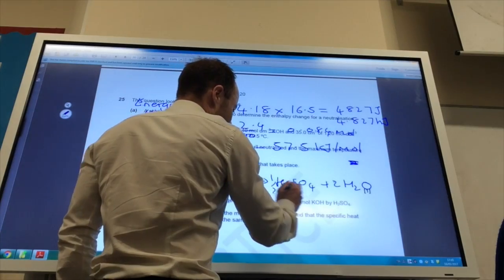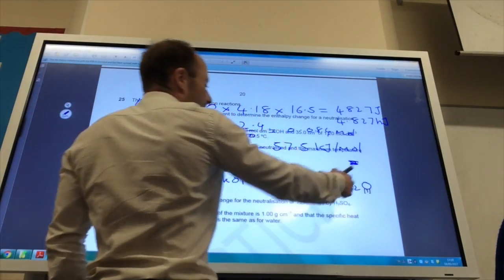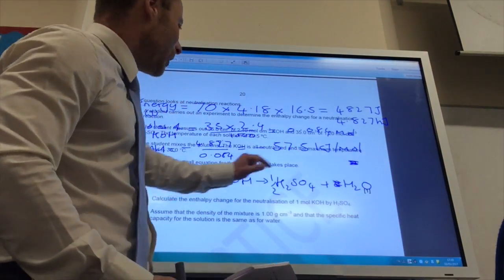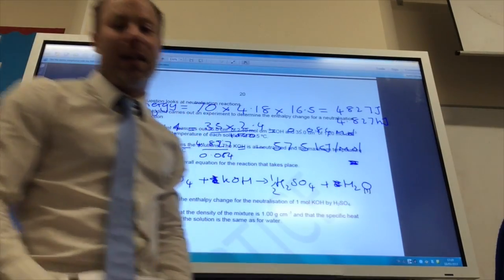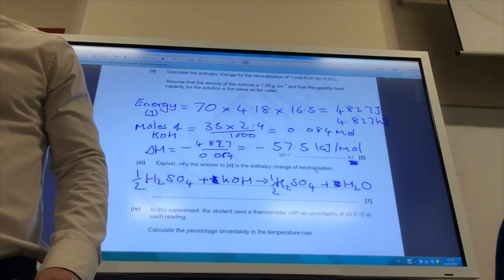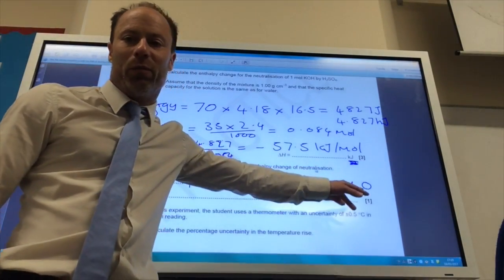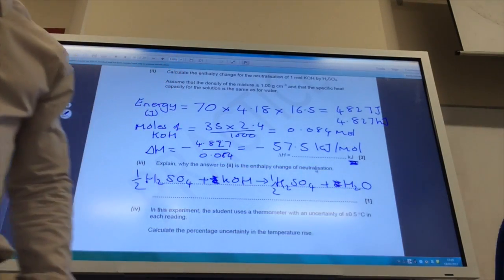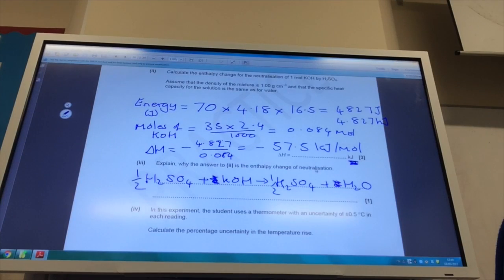But if that's now gone down to 1, it becomes a half H2SO4. One of those goes to half of that, and one of those, it's per mole. If I've got one of that, it's one mole of water, and therefore it is per mole of water. So one mole of water is formed.